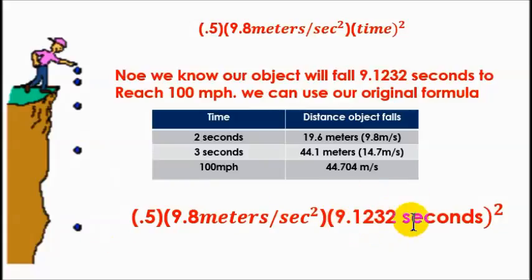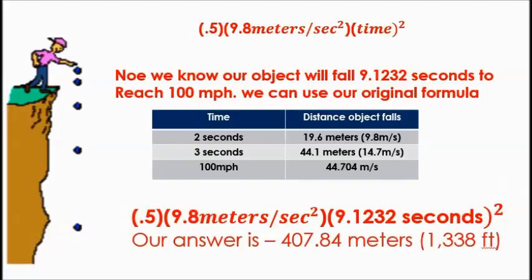So, we plugged in our time, we square it, like we did previously when we got the 1, 2, 3, 4, 5 seconds. We take our 9.1232 seconds, square it, we come up with a number, and then we multiply that by 9.8, and then we multiply by 0.5. So, our answer is 407.84 meters, or 1,333 feet.